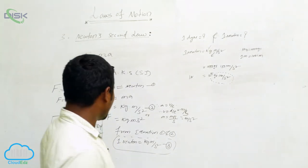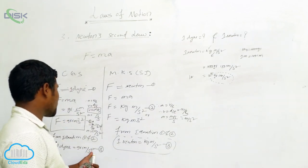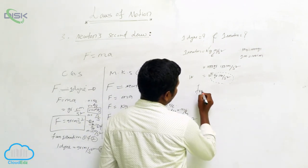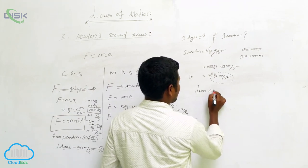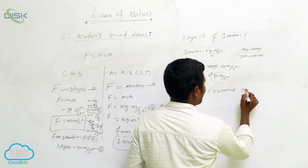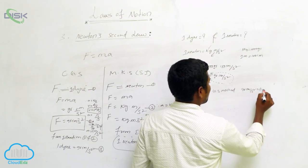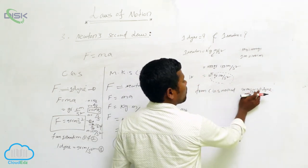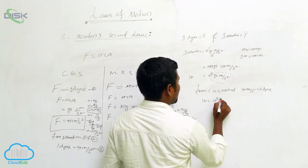Observe carefully: gram × centimeter per second squared is the CGS unit of force, which equals 1 Dyne. So from the CGS method, gram × centimeter per second squared equals 1 Dyne. Therefore, 1 Newton equals 10⁵ Dynes.